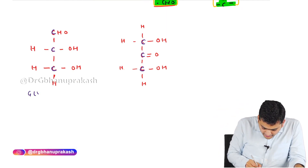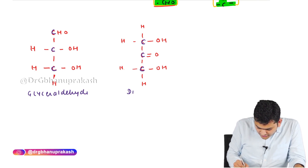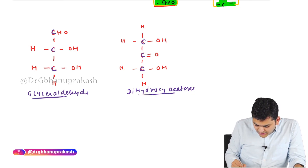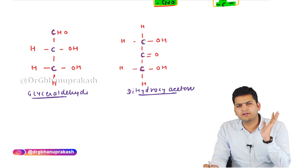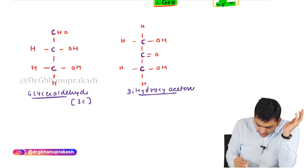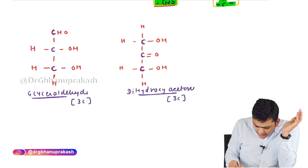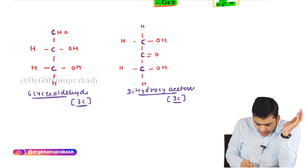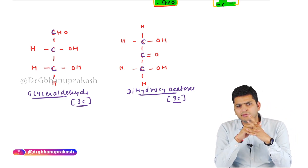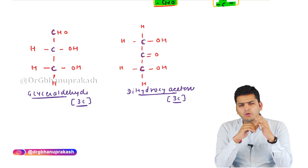The name of the aldehyde-based molecule is glyceraldehyde, and the keto-based one is dihydroxyacetone. These are the smallest possible carbohydrates. Less than three carbons, we cannot make a carbohydrate. The minimum requirement is a triose — at least three carbons — either glyceraldehyde or dihydroxyacetone.